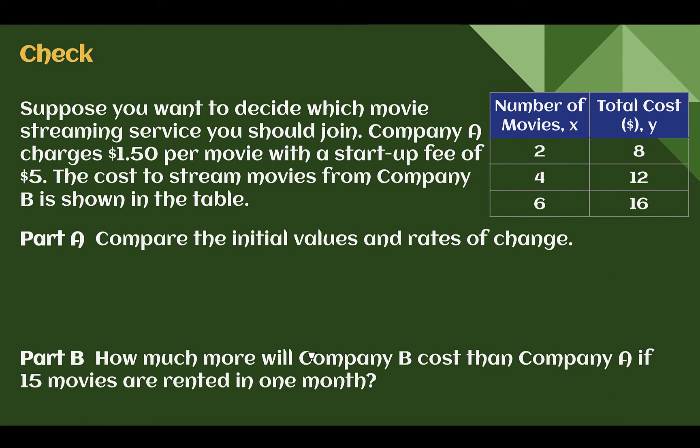Check your understanding. Suppose you want to decide which movie streaming service you should join. Company A charges $1.50 per movie with a startup fee of $5. The cost to stream movies from Company B is shown in the table. Based on this, answer both parts, compare their initial values and rates of change, and how much more would Company B cost than A if 15 movies were rented in a month? Pause the video now and complete the check.